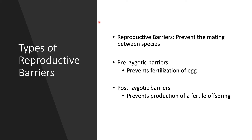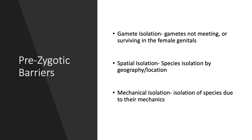The two main types are prezygotic and postzygotic barriers. Prezygotic barriers are things that prevent even the fertilization of an egg — so before you can get to a zygote. Postzygotic barriers prevent the production of a fertile offspring, so maybe fertilization and birth occur, but that offspring may not be fertile.